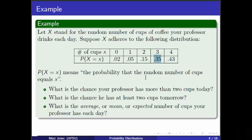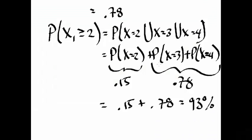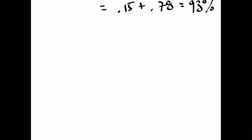When you have a distribution like this, remember by axiom number two, all of these probabilities have to sum to 100%, or one. The events X = 0, X = 1, X = 2, X = 3, and X = 4 are disjoint but also exhaustive — they make up the entire sample space.